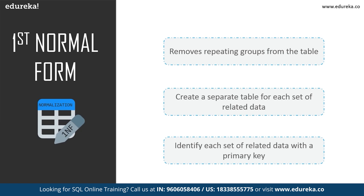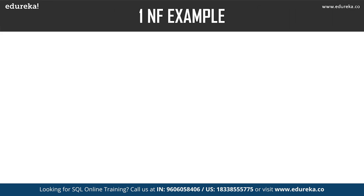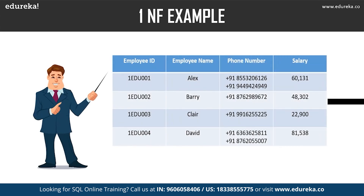The following operations are performed in first normal form: it removes repeating groups from the table, creates a separate table for each set of related data, and identifies each set with a primary key. In our employee table with columns employee ID, employee name, phone number, and salary, the phone number column has two values — thus it violates the first normal form.